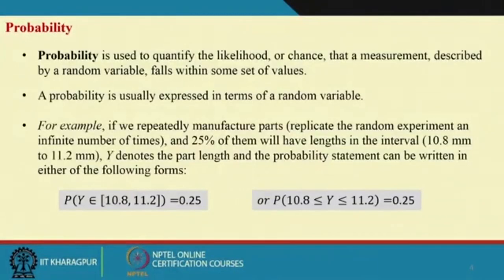The probability distribution for a discrete random variable is a discrete probability distribution; for a continuous random variable it is a continuous probability distribution. Probability is used to quantify the likelihood or chance that a measurement described by a random variable falls within some set of values. Probability is usually expressed in terms of a random variable — they are basically interchangeable.